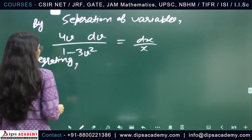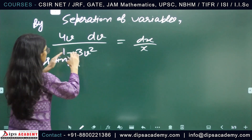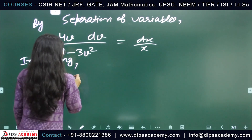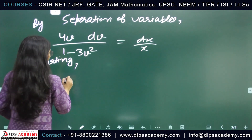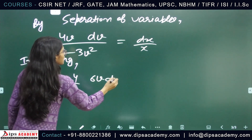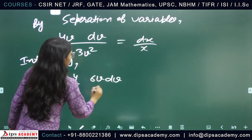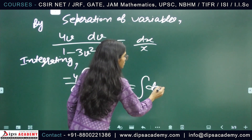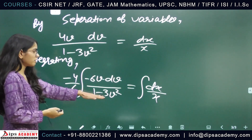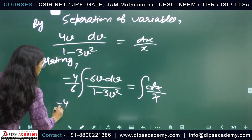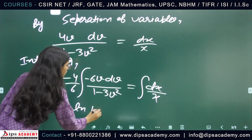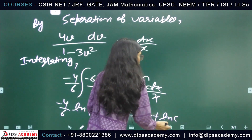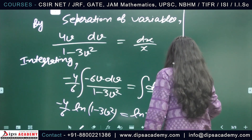Integrating both sides: on the left, since the derivative of the denominator (1 − 3v²) appears in the numerator after adjustment, we use the logarithm rule. Rearranging: −(4/6) · (−6v dv) / (1 − 3v²) = dx/x, which gives −(2/3) ln|1 − 3v²| = ln x + ln c.